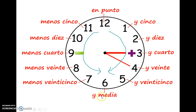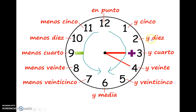Y media is half the clock, half an hour. So to say one thirty, you say es la una y media. That's on this half of the clock. You add: y cinco, y diez, y cuarto, y veinte, y veinticinco, y media.